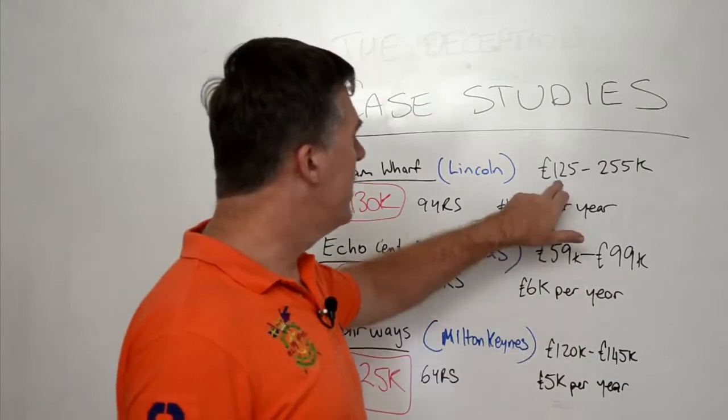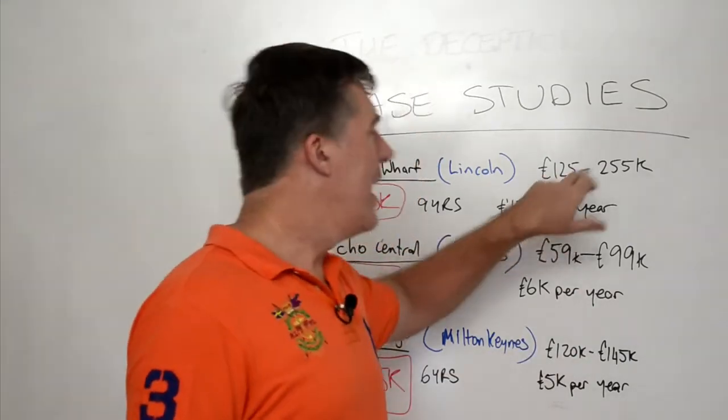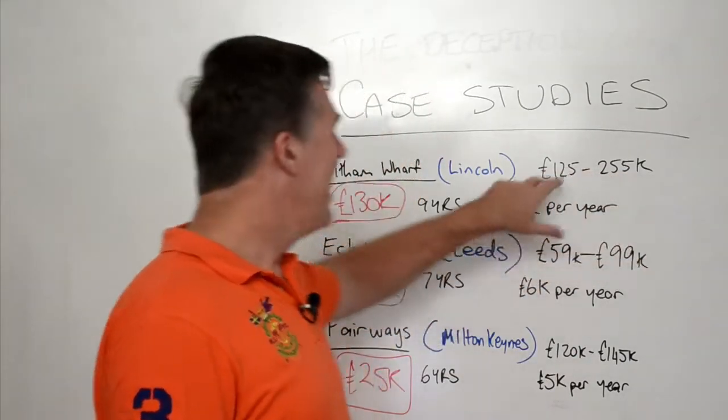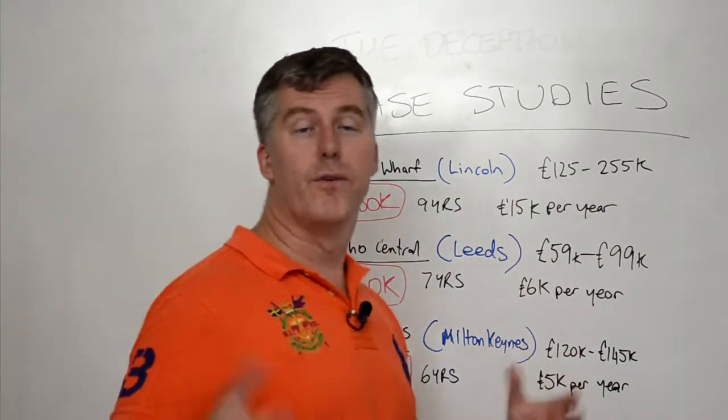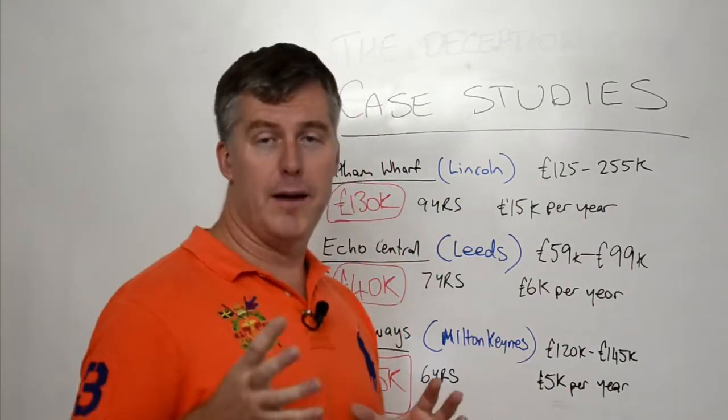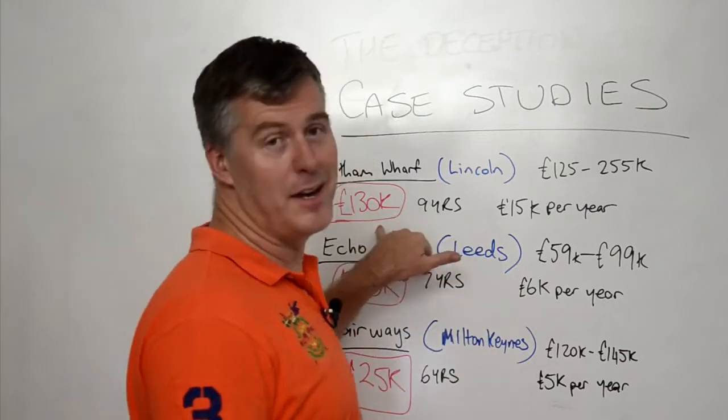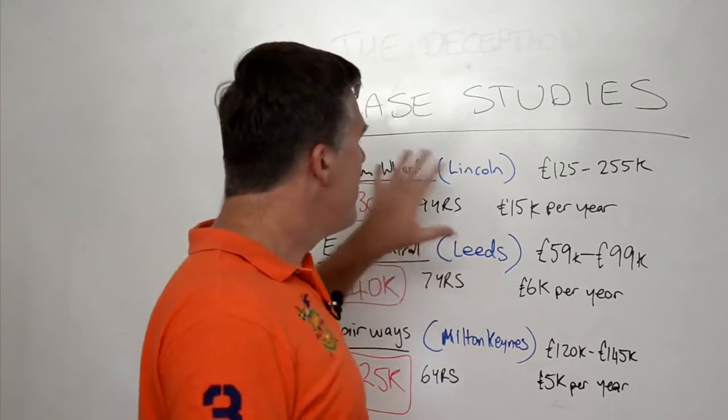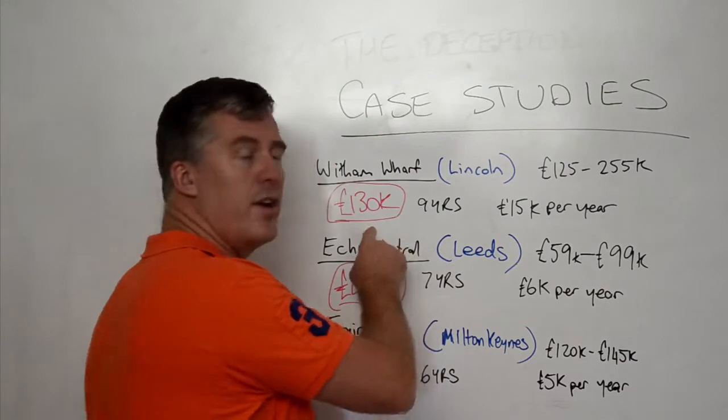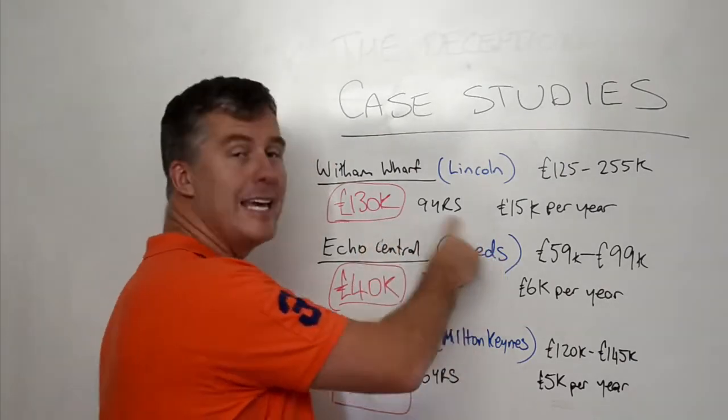And so therefore, that may represent three or four or 500% return. But the point here is that that £130,000 is over nine years of ownership. So it works out at £15 grand a year.